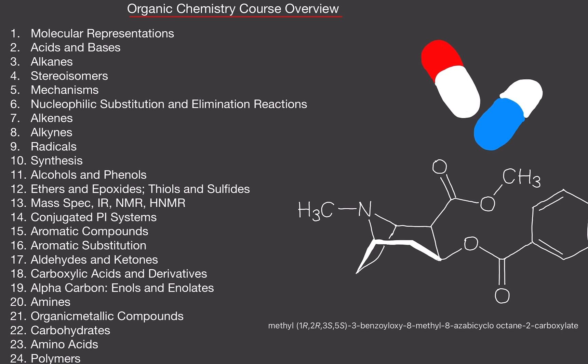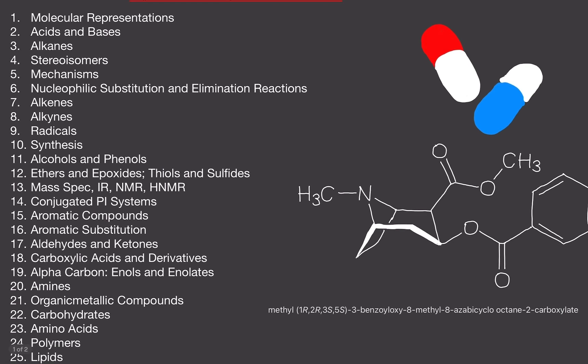Organic chemistry is made up of roughly 25 different chapters. If you're on a semester system at your college, you'll probably do half of it in one semester and the second half the following semester. If you're on a quarter system, you'll do one third, followed by the second third, and then the last third.